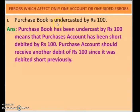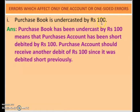So how do we solve a problem related to one-sided error? Let us see with an example. Purchase book is undercasted by rupees 100. In the subsidiary book chapter, we studied that the purchase book is a book in which we record all credit purchases. Cash purchases are not recorded in the purchase book. Suppose this purchase book is undercasted by rupees 100. Undercasted means the purchase book is short by rupees 100. Purchase book being undercasted means that the purchases account has been short debited by rupees 100.